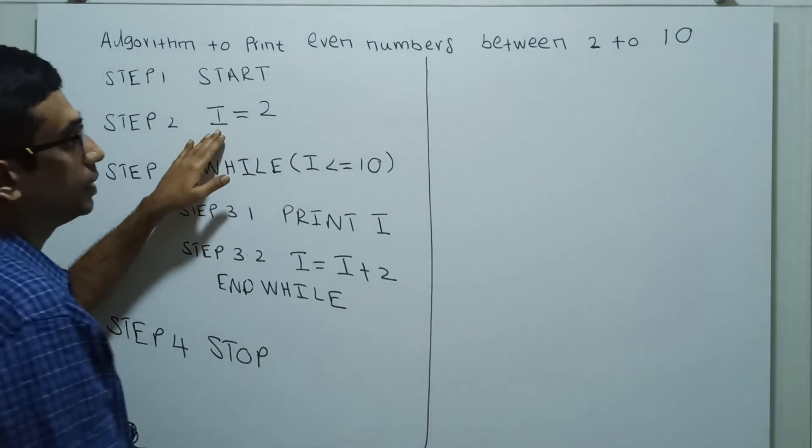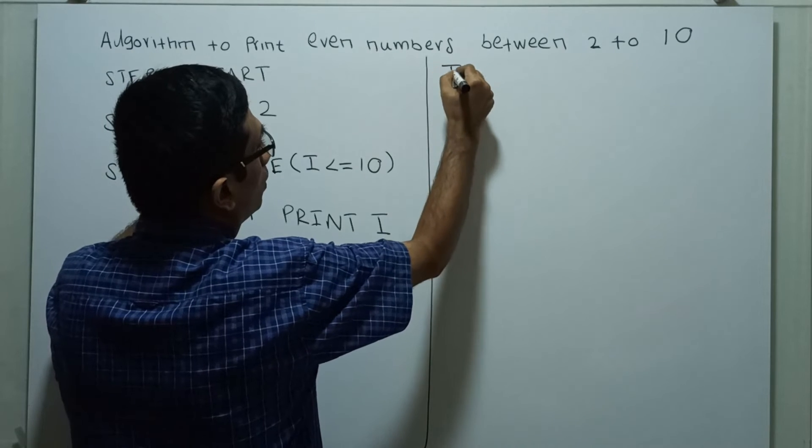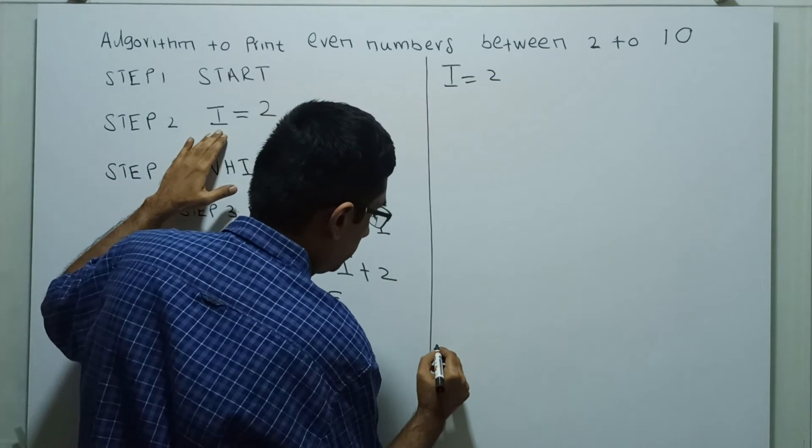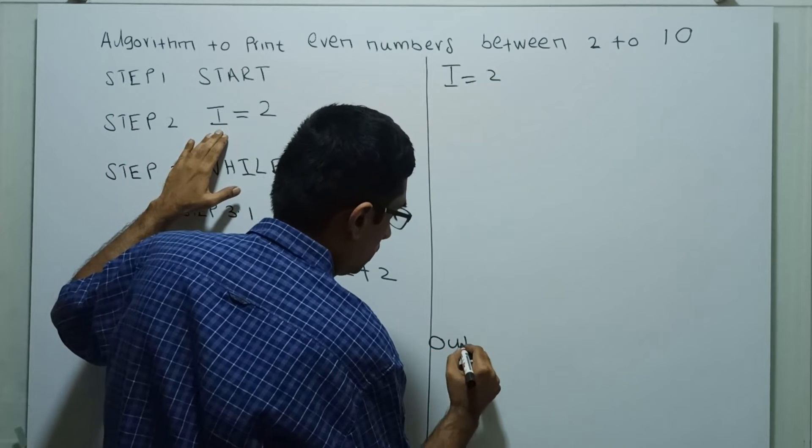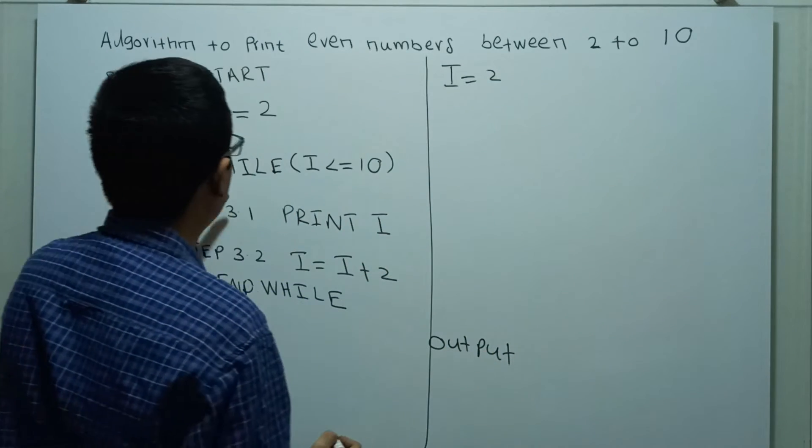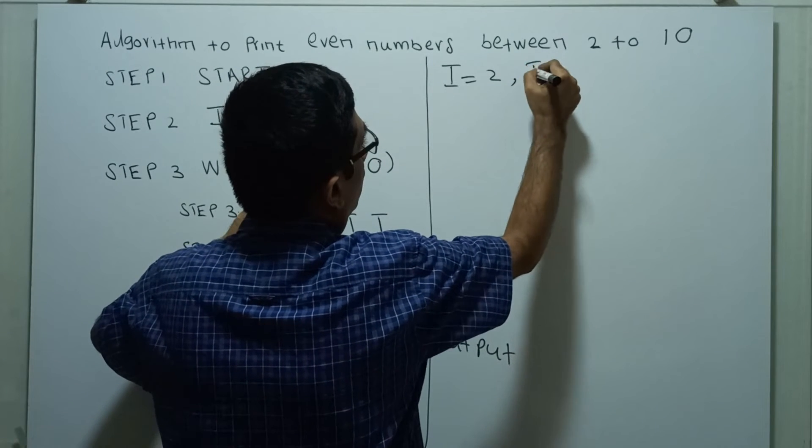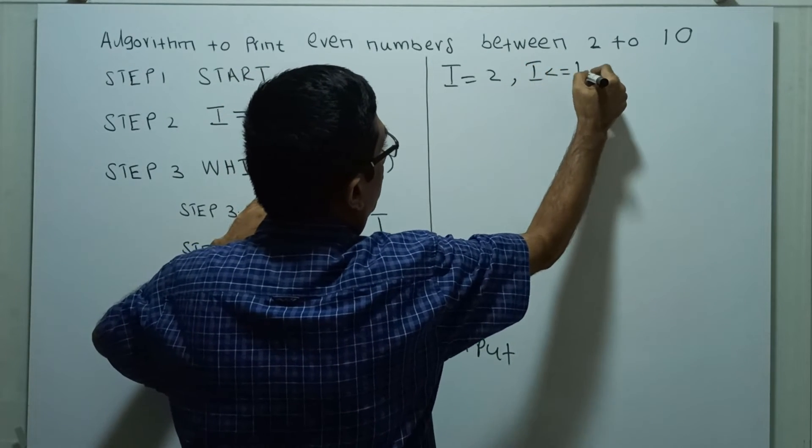So initial value of I is 2. We will write output here. I equal to 2. I less than or equal to 10.